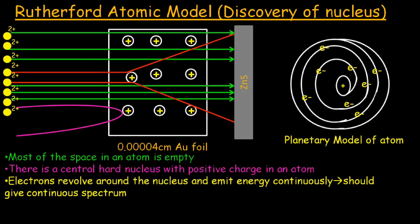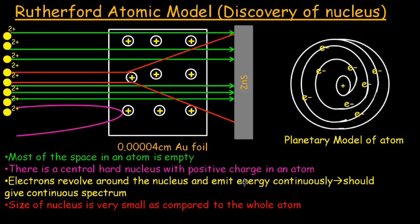He also suggested that electrons revolve around the nucleus and emit energy continuously. If they emit energy continuously, it means they should give a continuous spectrum. The size of the nucleus was found very small as compared to the whole atom.